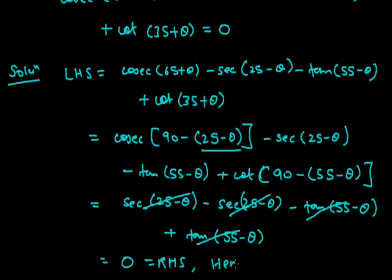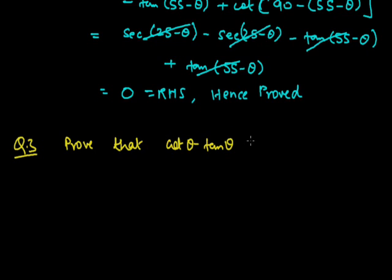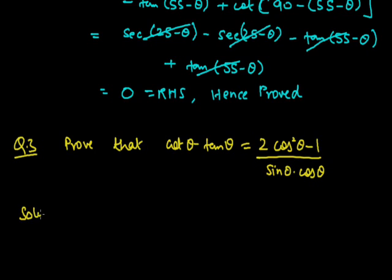So in this way we need to first analyze which part to convert into a complementary angle or which trigonometric identity to use. Now the next question is: Prove that cotθ - tanθ = (2cos²θ - 1) / (sinθ · cosθ). We will start with the LHS, which is cotθ - tanθ.